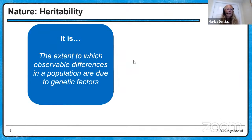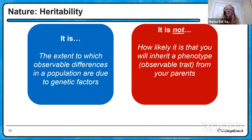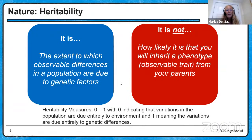I also want to talk about heritability versus heredity because many people confuse them. Heritability is the extent to which, if you look at a population, the observable differences between people are due to genetic factors — like hair color, eye color, height. It is not how likely it is that you will inherit a certain trait from your parents. Heredity is about the probability of inheriting a trait from your parents. One is about variation in a population due to genes; the other is about the chance of getting a trait from your parents.